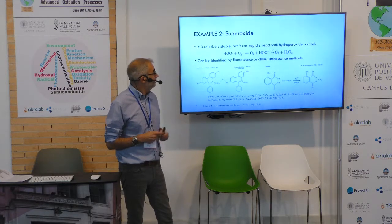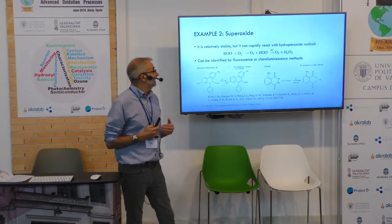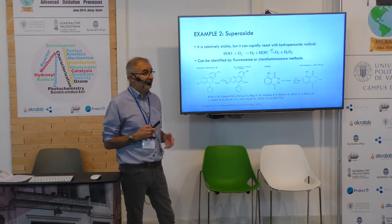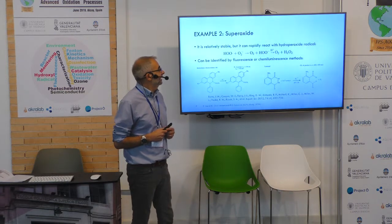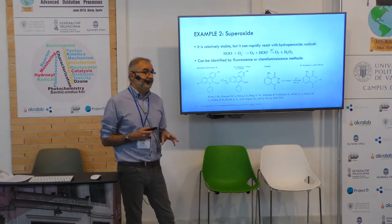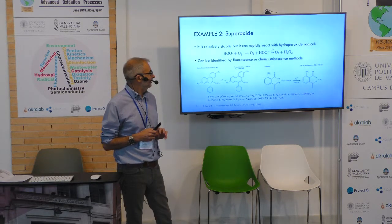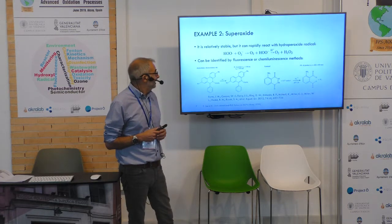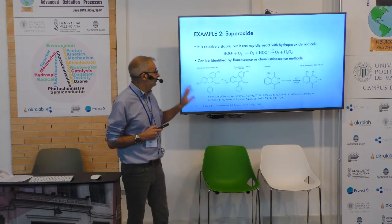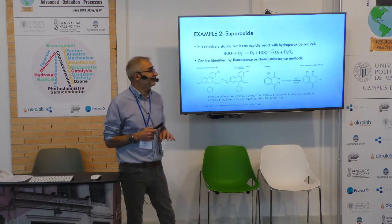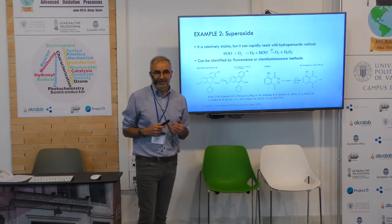The second example is superoxide. Superoxide is quite stable with respect to hydroxyl radical, but it can rapidly react with hydrogen peroxide radical. This protonation gives a non-radical species. So also in this case we generally need to use an indirect method. These are two examples taken from a review where the detection methods were fluorescence or chemiluminescence, and different probes were used in order to obtain stable species which can be revealed to obtain information about superoxide.